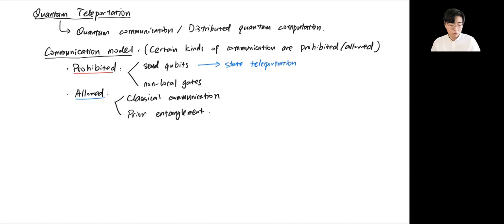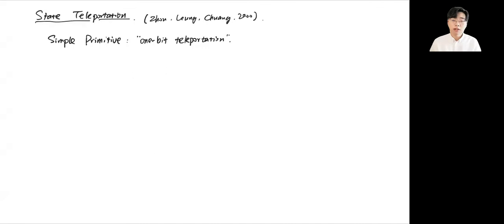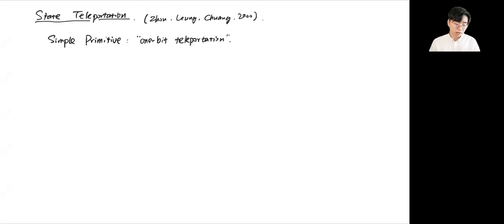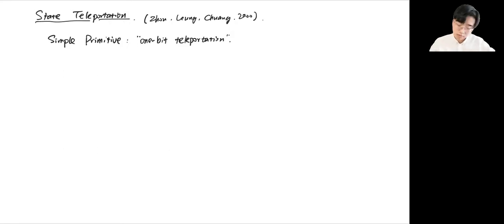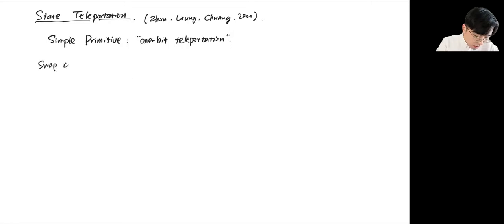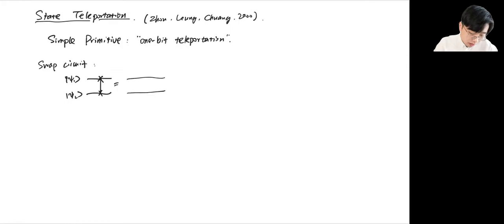We can also accomplish non-local quantum gates through a process called gate teleportation. For state teleportation, I'm going to follow a very intuitive and beautiful methodology for constructing the teleportation circuit by Zhou, Leung, and Chuang in the year 2000. We are going to start with a simple primitive called one-bit teleportation, where we want to send a quantum state from one qubit to another. Remember from the previous lecture, that is the operation called the swap gate. Previously, we had the swap circuit where we want to exchange ψ₁ and ψ₂, implemented by three CNOTs. At the end, we have ψ₂ on the top qubit and ψ₁ on the bottom.